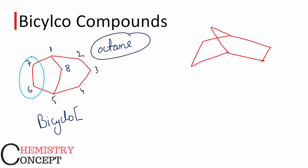The first portion contains two carbons, the second contains three carbons, and the third — the bridge — contains only one carbon. We are ignoring and not counting the carbons that are common to the three portions. So what I have to do now is start from the term 'bicyclo' and write a square bracket.